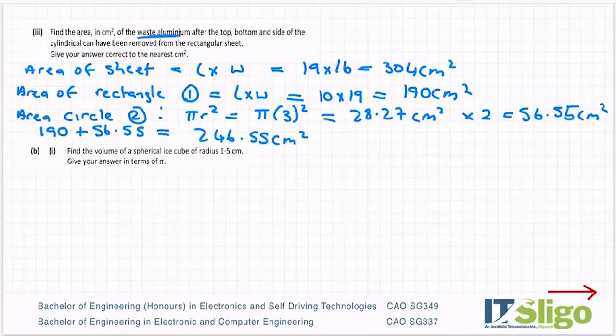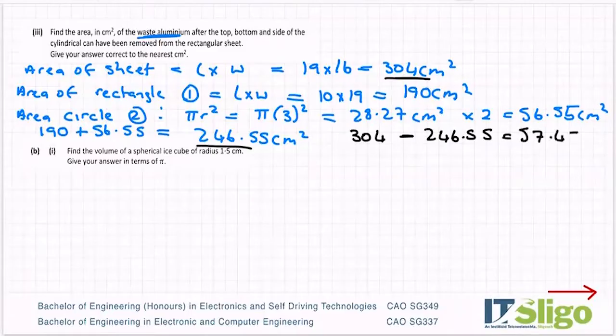And we're looking for the waste, so we subtract. So 304, which is this one, minus this one, 246.55. So 304 minus the answer is 57.45 centimeters squared. Give your answer correct to the nearest centimeter, again 57 centimeters squared.